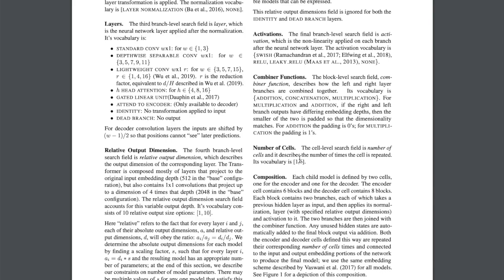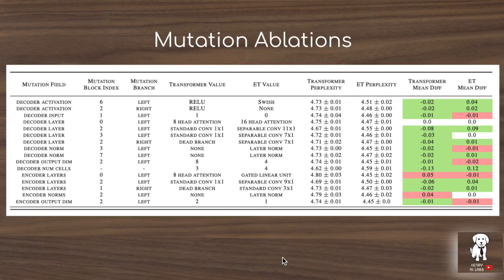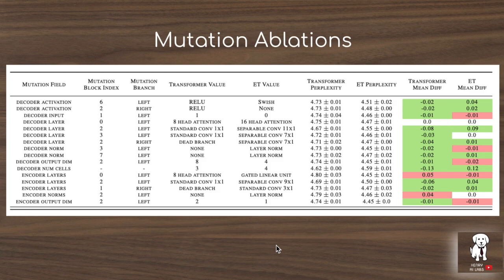The number of cells determines how many times to repeat the block when stacking to form the overall transformer. The search begins at a smaller scale to show the impact of certain mutations on the resulting perplexity when trained on a neural machine translation task. Certain mutations, like increasing the number of cells in the decoder from three to four times, result in a very large decrease in perplexity, where lower is better. Other mutations, like replacing the 8-headed attention with a gated linear unit, increase perplexity. This ablation shows how different mutations within the genetic code affect the resulting model performance.